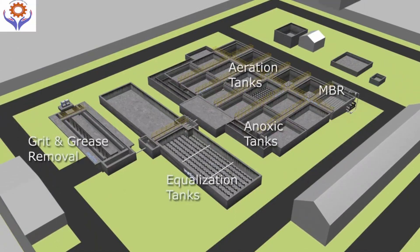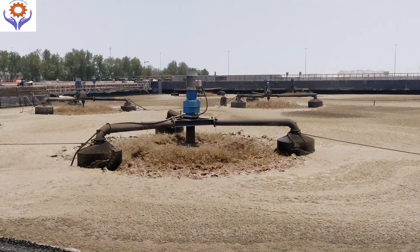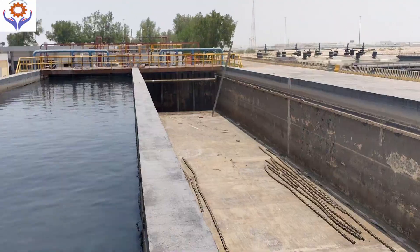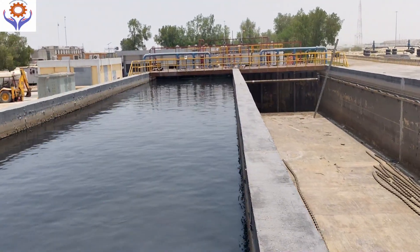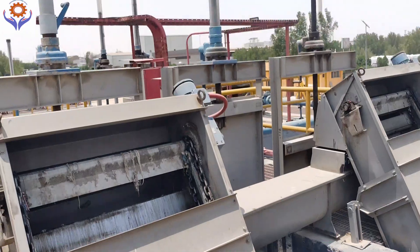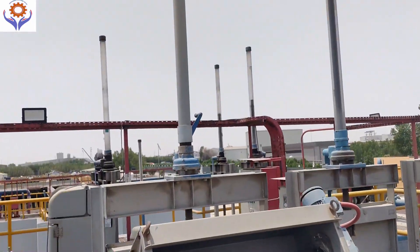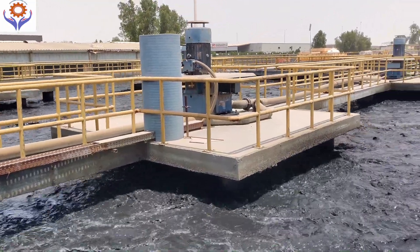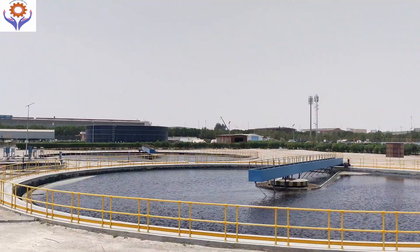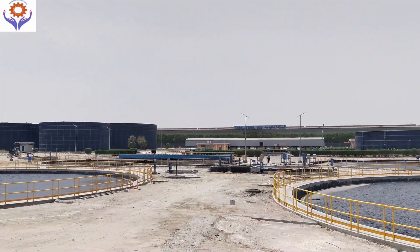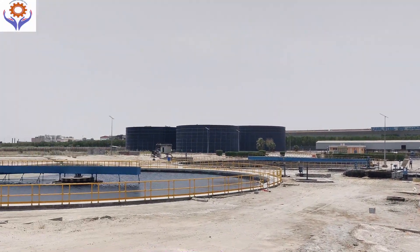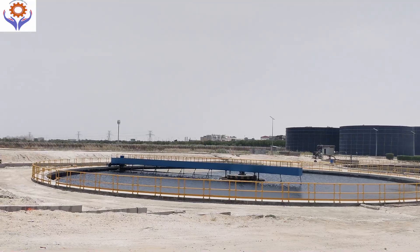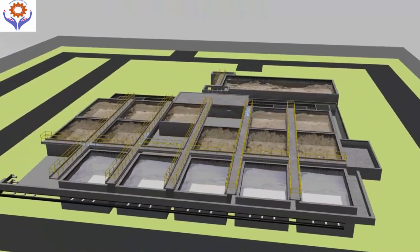Water treatment plants play a vital role in protecting public health and the environment. Before it is reused or released, they remove solids, organic waste, and harmful pollutants from water. In this process, wastewater passes through several physical, biological, and chemical treatment stages.